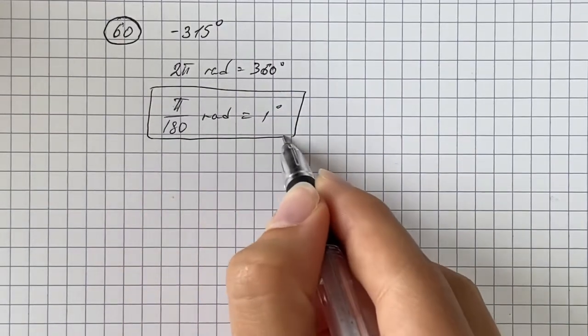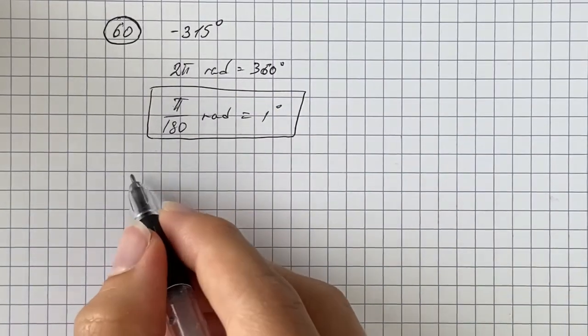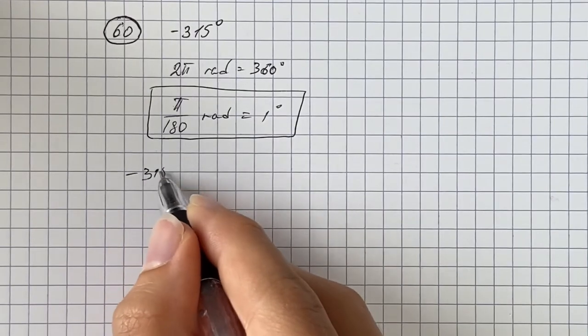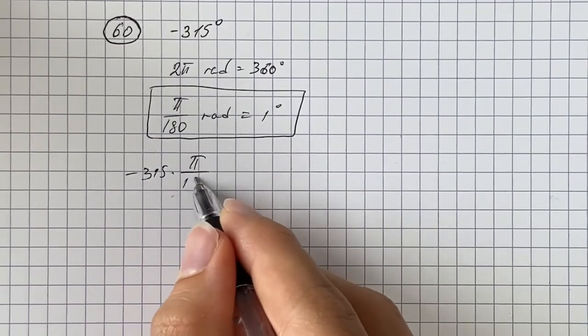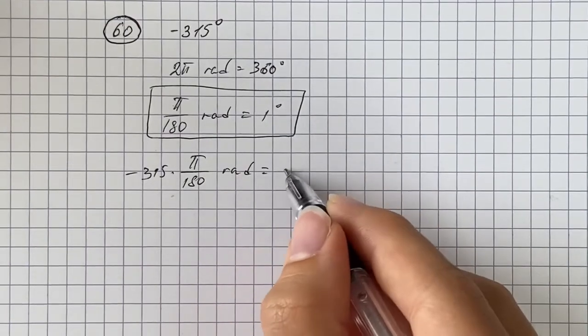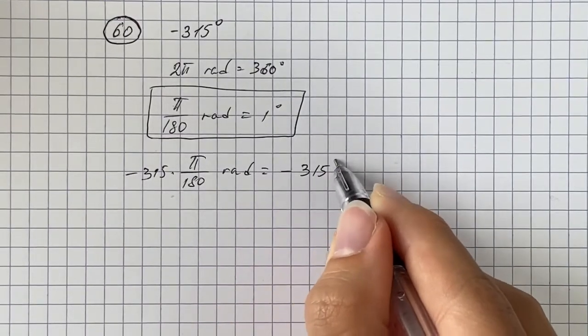So multiply both sides by negative 315 and we get negative 315 times pi over 180 radians equals negative 315 degrees.